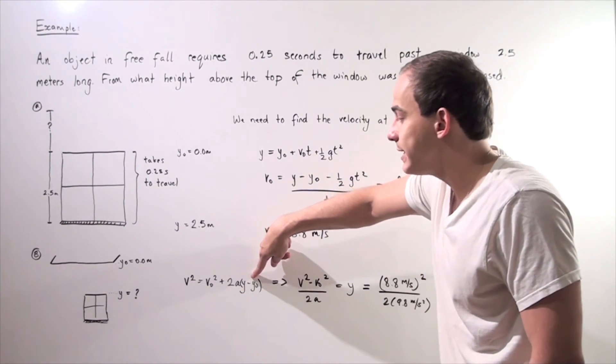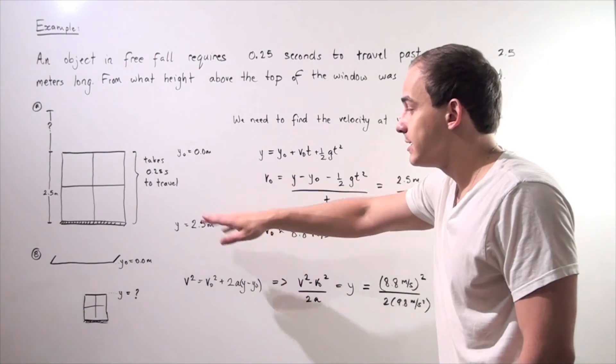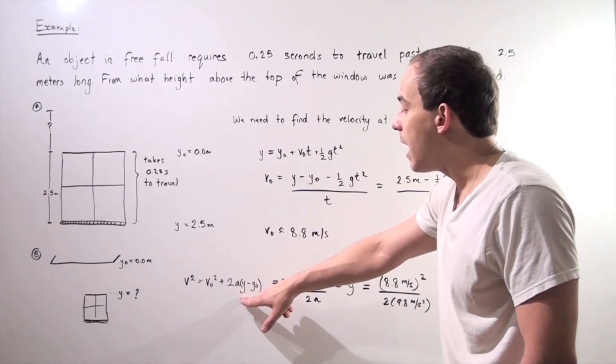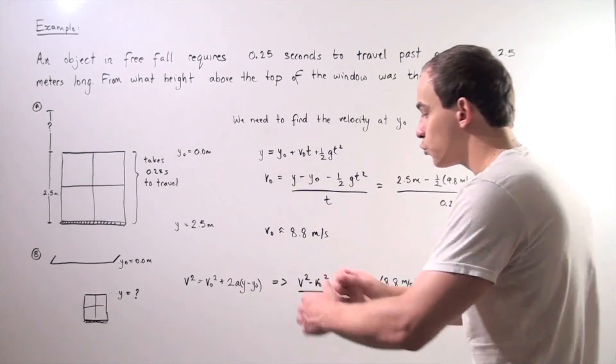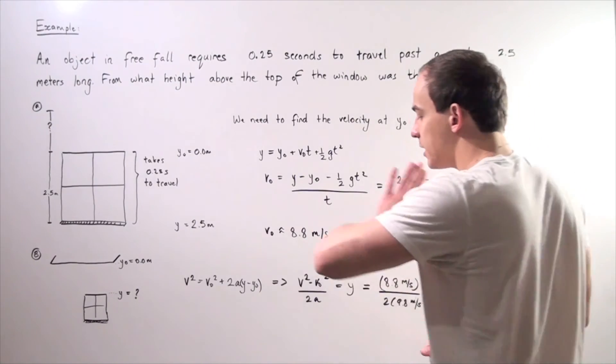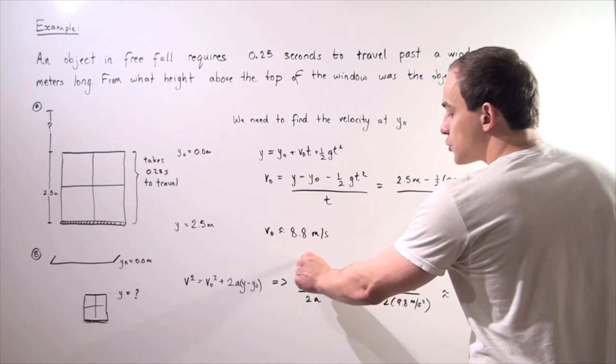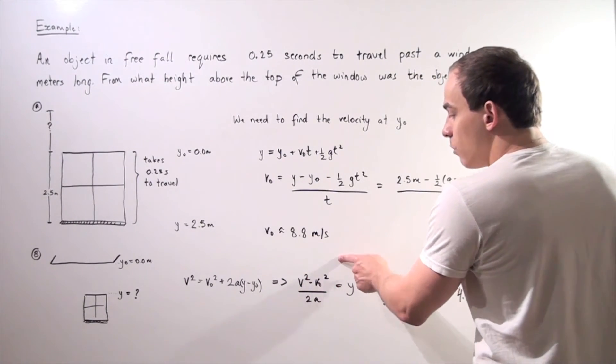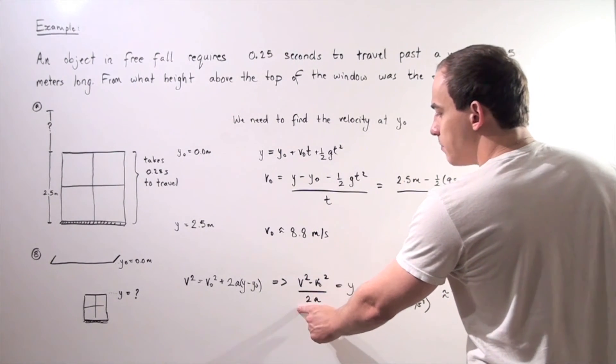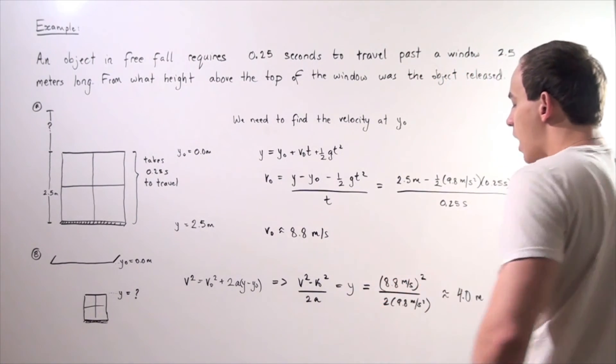Our y naught is zero. Our y final is what we're trying to find. So let's rearrange this equation. Bring everything on one side and y on the other side. So we get our v final squared minus v initial squared divided by 2A equals y.